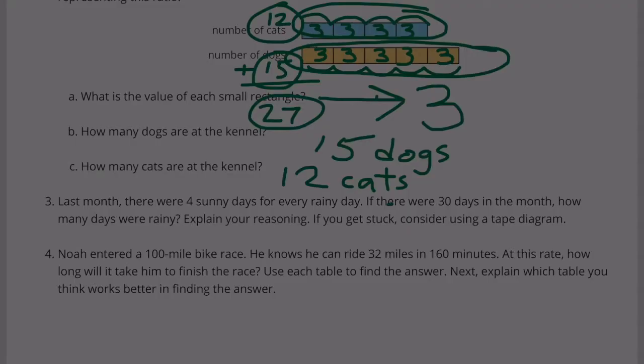Last month, there were 4 sunny days for every rainy day. If there were 30 days in a month, how many days were rainy? Explain your reasoning. If you get stuck, consider using a tape diagram.